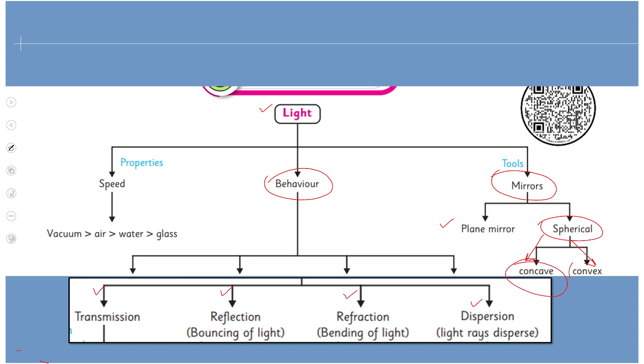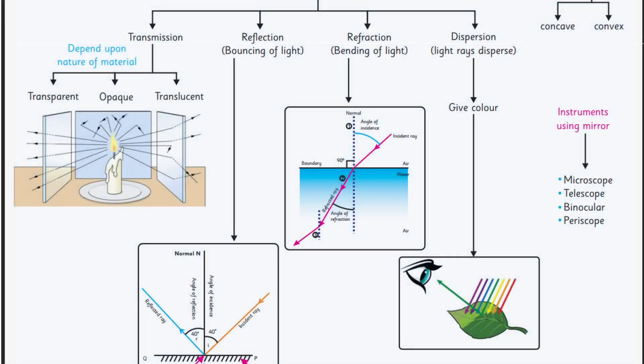Uske ilawa humne speed of light ko discuss kiya in different mediums and after discussion we come to the conclusion that the speed of light is greater in vacuum and then in air, aur uske baad water mein aur last pe humare paas aata hai glass.